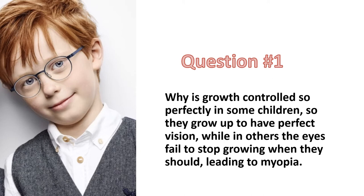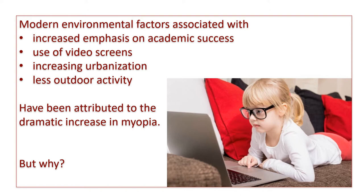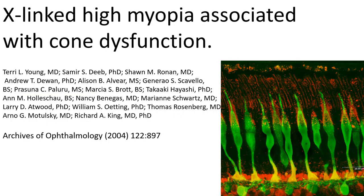So we have two questions. First, why is growth controlled so perfectly in some children so they grow up to have perfect vision, while in others the eyes fail to stop growing when they should, leading to myopia? The second question is why has both the prevalence and severity of myopia escalated to epidemic proportions? Modern environmental factors associated with increased emphasis on academic success, use of video screens, increasing urbanization and less outdoor activity have been attributed to the dramatic increase in myopia, but we don't know why.